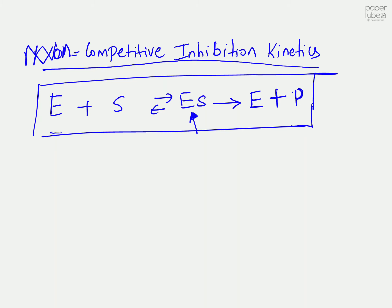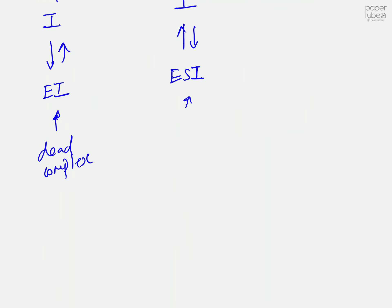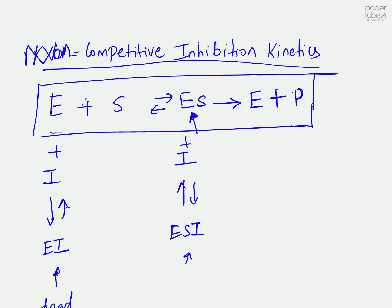If you have a non-competitive inhibitor in solution, it can associate with your free enzyme to form an enzyme-inhibitor complex. It can also associate with your enzyme-substrate complex to form an enzyme-substrate-inhibitor complex. Both of these are dead-end complexes, meaning nothing will be converted into a new molecule from either of them, and both are completely reversible and effectively instantaneous.